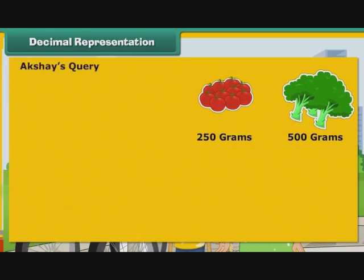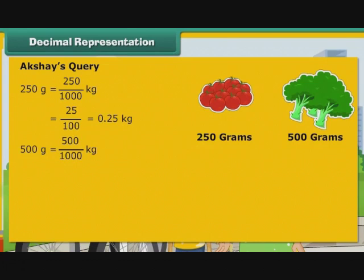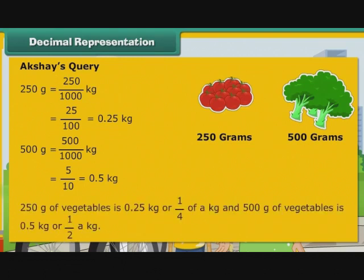Let us now express the vegetables Akshay's mother purchased as kilograms. 250 grams is equal to 250 by 1000 kg, that is equal to 25 by 100 kg, that is equal to 0.25 or 1 by 4 kg. 500 grams is equal to 500 by 1000 kg, that is equal to 5 by 10 kg, that is equal to 0.5 or 1 by 2 kg. So 250 grams of vegetables is 0.25 kg and 500 grams of vegetables is 0.5 kg.